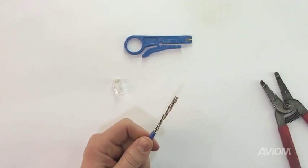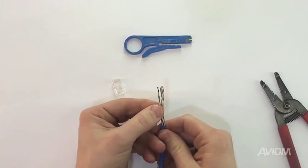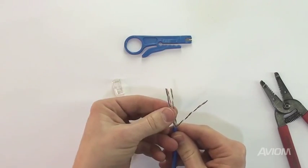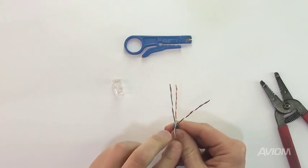Begin by stripping the outer jacket off the CAT5 wire. This can either be accomplished with a specialized tool such as the blue one pictured or simply use the wire stripper as shown.